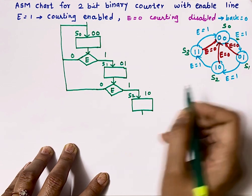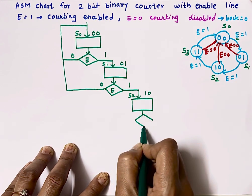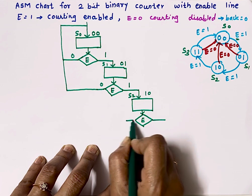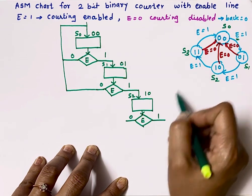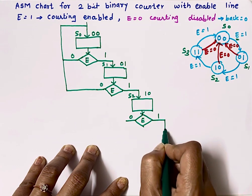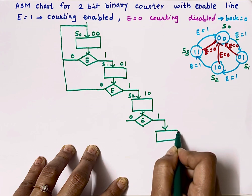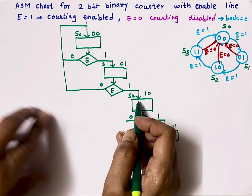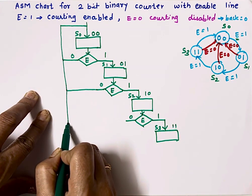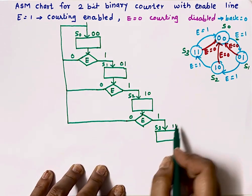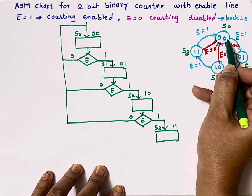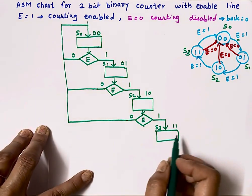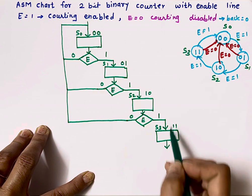Now in state S2 with binary equivalent 10. Don't forget to draw the arrow. If E equals 1, it will go to state S3 with binary equivalent 11. But if E equals 0, it will go to state 00. Then in state S3 with binary equivalent 11: if E equals 1, it goes to 00, and if E equals 0, it also goes to 00. So here I don't need any decision box, because for both cases it goes back to state 00.